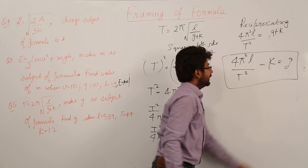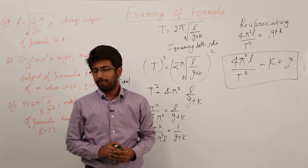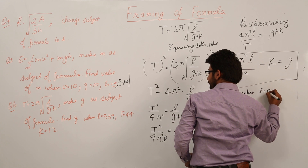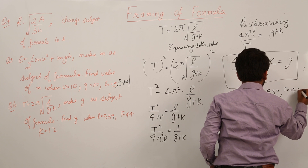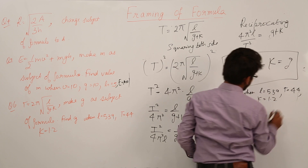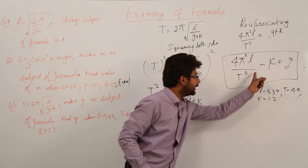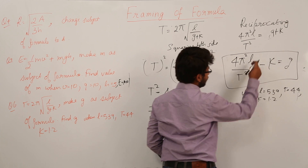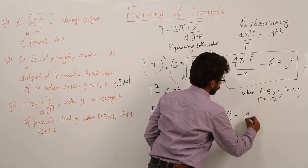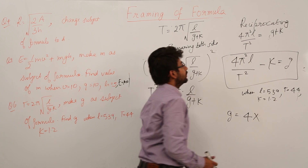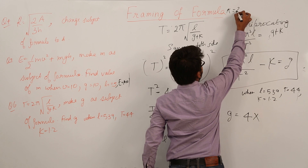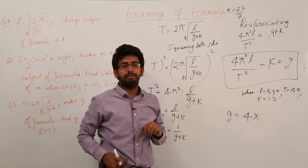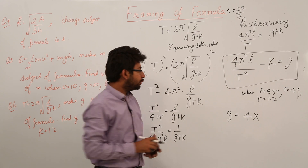This completes the first part — g equals 4π squared l over t squared minus k. For the second part, we find g when l equals 539, t equals 44, and k equals 1.2. The value of π is 22 by 7, so π squared is 22 over 7 times 22 over 7.